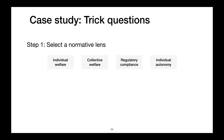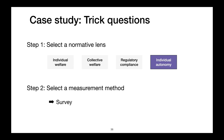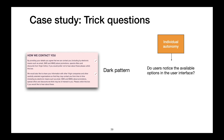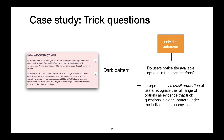But instead of the individual welfare lens, say we were to pick the individual autonomy lens and select a survey method. Under the individual autonomy lens, we would select a metric to study the loss of autonomy — one such metric could be whether users notice the available options in the interface. Rather than contextualizing the metric by comparing it to a baseline, we could examine it in isolation, and interpret if only a small proportion of users recognize the full range of options as evidence that trick questions is in fact a dark pattern under the autonomy lens. Of course, there are a variety of different considerations that go into designing such a user study, and our paper highlights several of these.